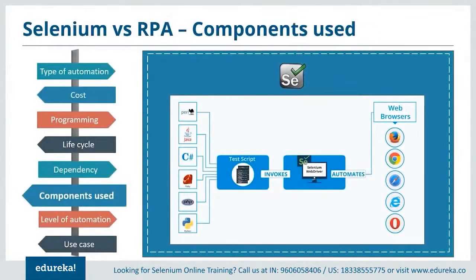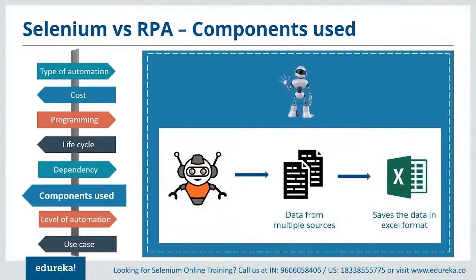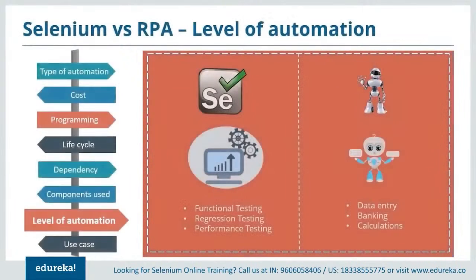Regarding components: Selenium uses web drivers to automate tasks. Test scripts written in any programming language can be invoked by the system and automated using Selenium WebDriver, which runs on browsers like Chrome, Safari, and Mozilla. RPA makes use of robots to complete tasks. For example, RPA bots can automate data entry from different sources and save it as an Excel file. In terms of level of automation: Selenium automates functional, regression, and performance testing, while RPA automates all clerical processes like data entry and calculations.